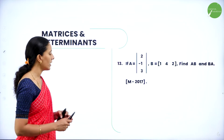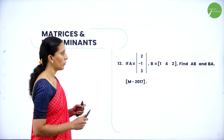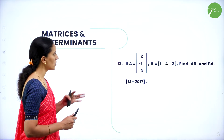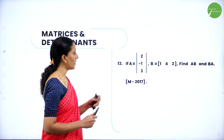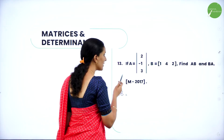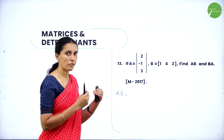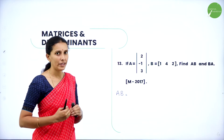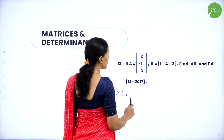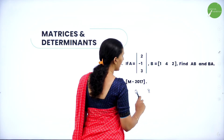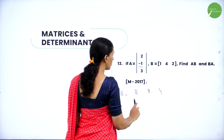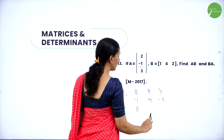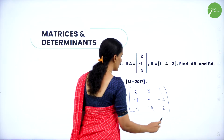If A = [2, -1, 3] (1×3 matrix) and B = [1; 4; 2] (3×1 matrix), find AB and BA. Multiplication of matrices may come for two-mark questions. For AB: first row into first column — 2×1 = 2, then first row into second column 2×4 = 8, 2×2 = 4; then minus 1×1 = -1, -1×4 = -4, -1×2 = -2; then 3×1 = 3, 3×4 = 12, 3×2 = 6. This is matrix AB.